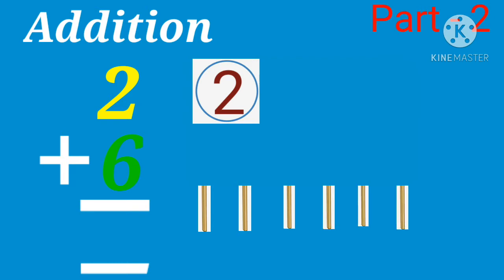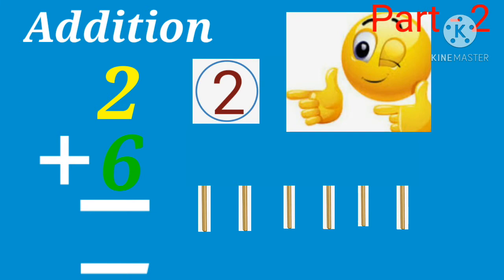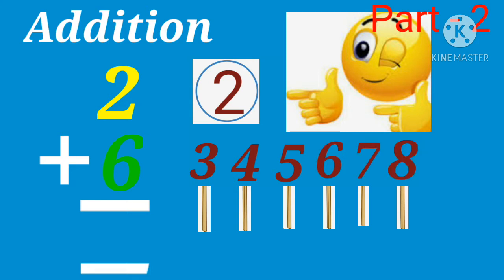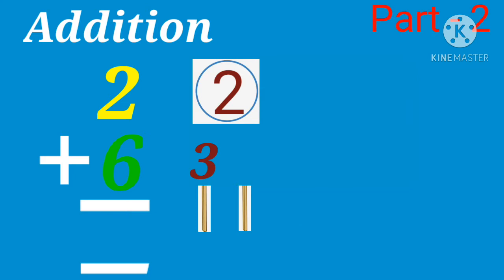Count all together: 2, 3, 4, 5, 6, 7, 8. Total sum 8.